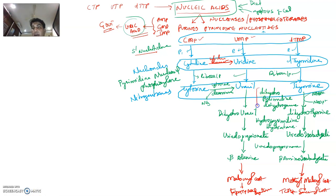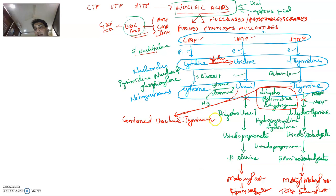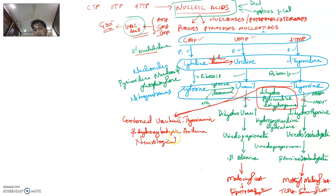Now let us look at a few important clinical points. The enzyme dihydropyrimidine dehydrogenase — if it is absent, it will block this step. When this step is blocked, uracil and thymine accumulate and appear in the urine as combined uracil-urea or thymine-urea, or beta-hydroxybutyric acid urea. We see many neurological sequelae because of this disorder.